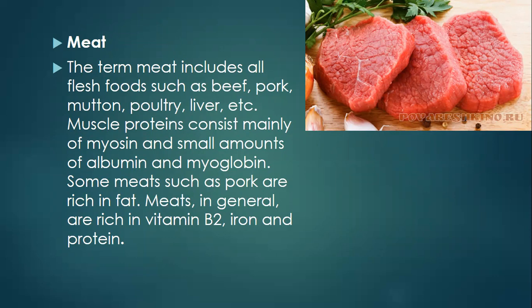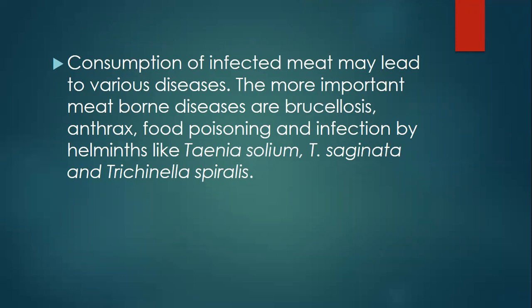Meat: The term meat includes all flesh foods such as beef, mutton, poultry, and liver. Muscle proteins consist mainly of myosin and small amounts of albumin. Some meat such as pork is rich in fat. Meat in general is rich in vitamin B12, iron, and protein. Consumption of infected meat may lead to various diseases. The more important meat-borne diseases are tapeworm, food poisoning, and infections like Salmonella and others.